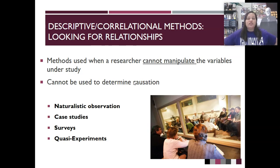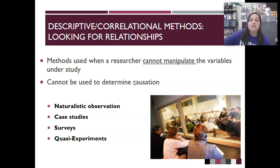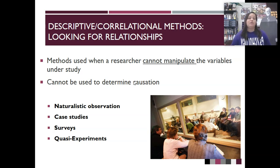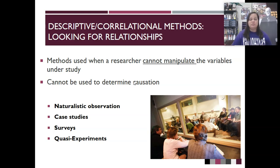Getting into the actual types of research — these are descriptive or correlational methods. They're really just looking for relationships, and the key thing is that with all of these methods, the researcher cannot manipulate the variables. They can only observe the results, so we cannot determine causation here. For example, we can't determine that some chemical in the brain causes anxiety — this is not an experiment. Instead, we can observe behaviors and make connections about patterns, and then theorize about different ways to change behaviors.